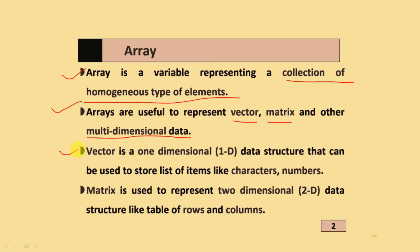What is vector? It is a one-dimension 1D data structure that can be used to store list of items like characters, numbers, and others. Matrix is used to represent two-dimensional 2D data structures like table of rows and columns.